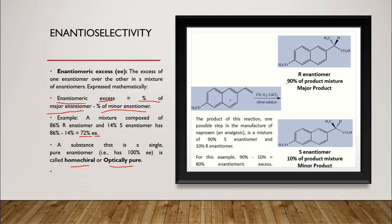In this particular reaction, we end up with the R enantiomer, which is 90% of the product mixture, and the S enantiomer, which is 10% of the product mixture. The product of this reaction — one possible step in the manufacture of naproxen, an analgesic — is a mixture of 90% S and 10% R, and the enantiomeric excess is 80%.